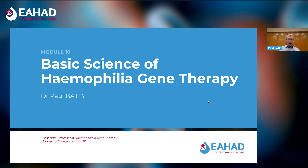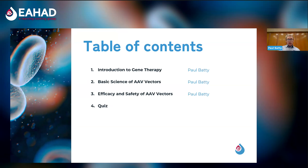Welcome to module 10 of the EHAD eLearning Academy modules. During this module we're going to look at the basic science of haemophilia gene therapy. I'm Dr Paul Batty, an associate professor at University College London and a haematologist at the Royal Free Hospital in England. Over the course of this module we will look in three parts: an introduction to gene therapy, the basic science of different AAV vectors used in haemophilia treatment, and the efficacy and safety of AAV vectors from a basic science point of view. At the end of each part we'll have a short quiz question.